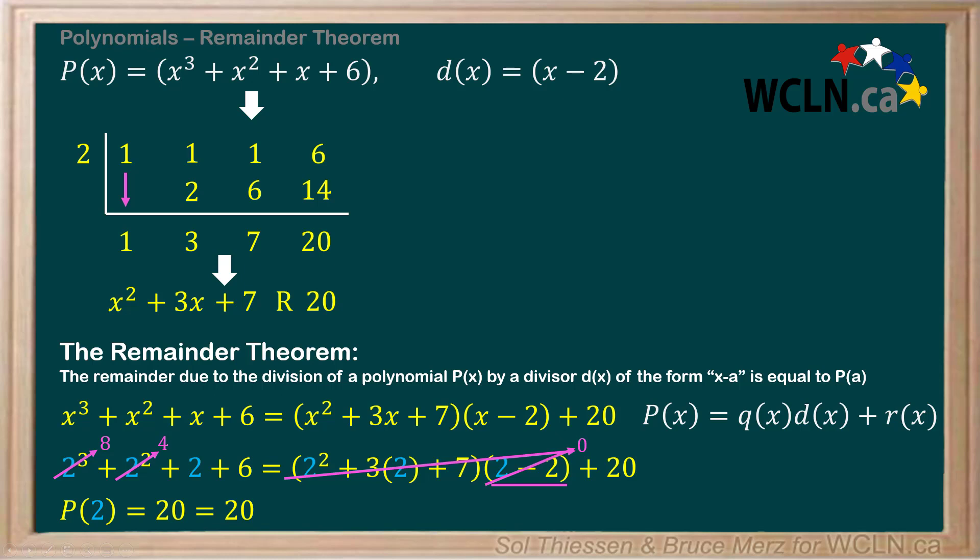As you can see, the polynomial P(x) evaluated at x equals 2 is equal to the remainder when P(x) is divided by x minus 2. This is the Remainder Theorem in action.